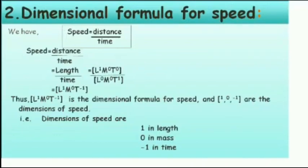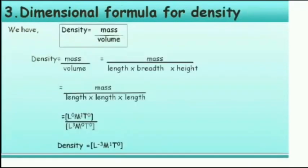Now the second example: we will derive the dimensional formula for speed. Speed equals distance divided by time, which equals length divided by time. The dimension of length is [L¹, M⁰, T⁰] and for time is [L⁰, M⁰, T¹]. So the dimensional formula for speed is [L¹, M⁰, T⁻¹].